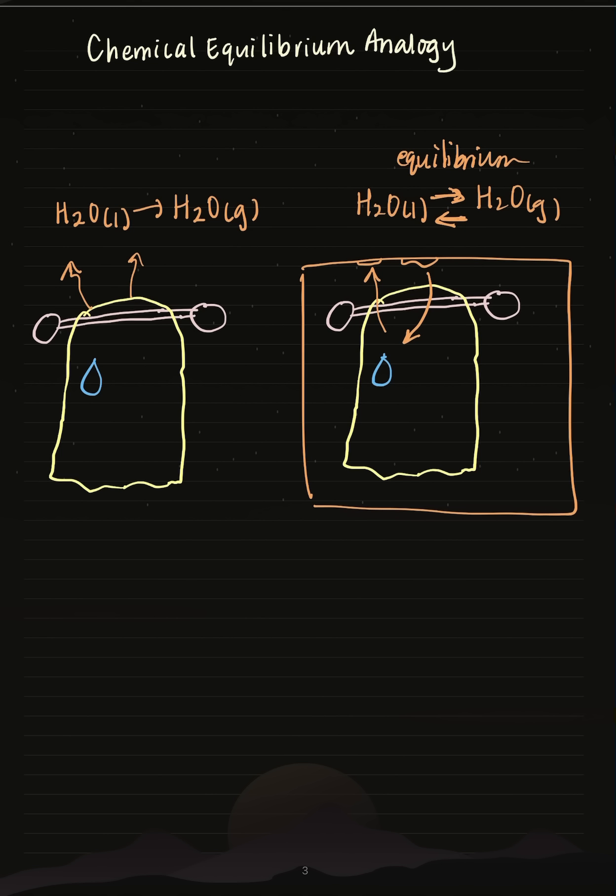When this happens, if this was to happen in real life, this towel wouldn't actually dry. This would remain wet because the water would evaporate, but then it would just fall back down, keeping it in the state of dynamic equilibrium.